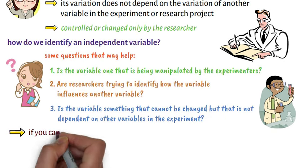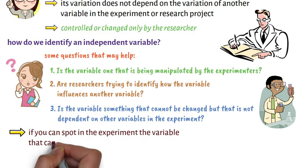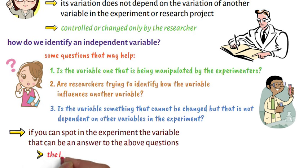So, if you can spot in the experiment the variable that can be an answer to the above questions, then that is the independent variable.